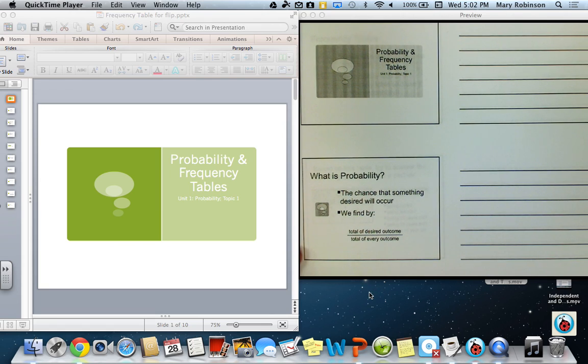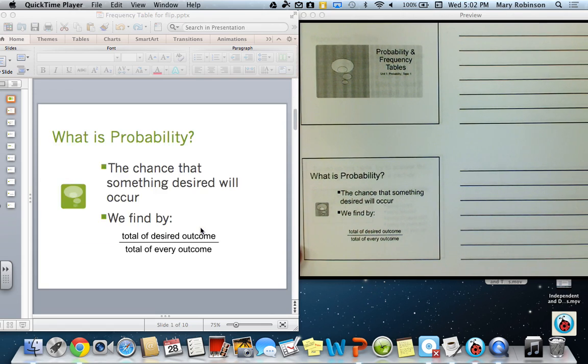So probability is the chance that something desired will occur. How do we find that probability? We take the number of desired outcomes, that total, and we divide by the total of every possible outcome available.